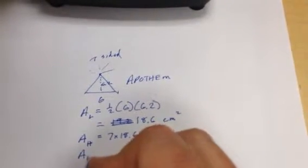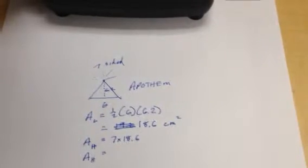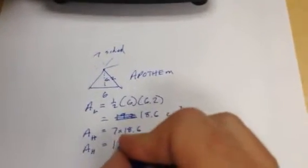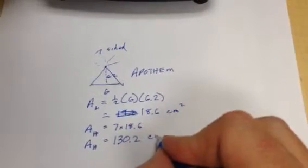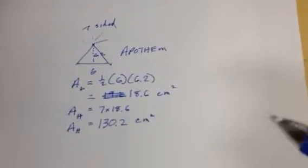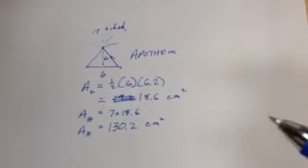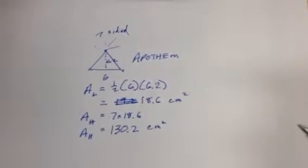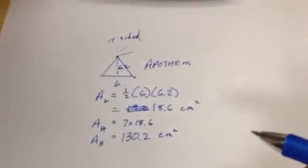So it's 7 times 18.6. And so the area of that heptagon is 130.2. And at this point, usually these are in combination with a right prism question. And so like if the height of the prism was 10, this becomes trivial now. It's 10 times 130.2. That is the volume of that right prism with this heptagon as a base.